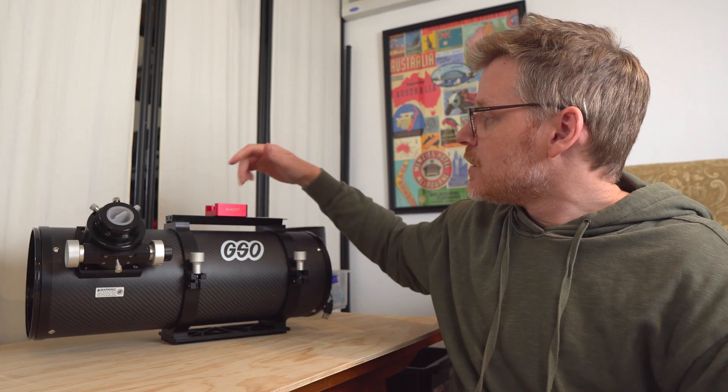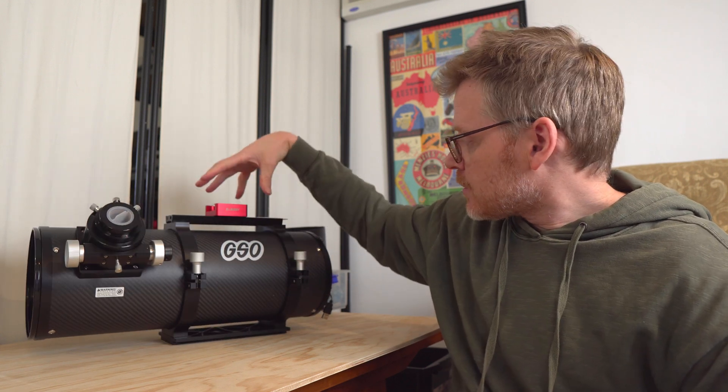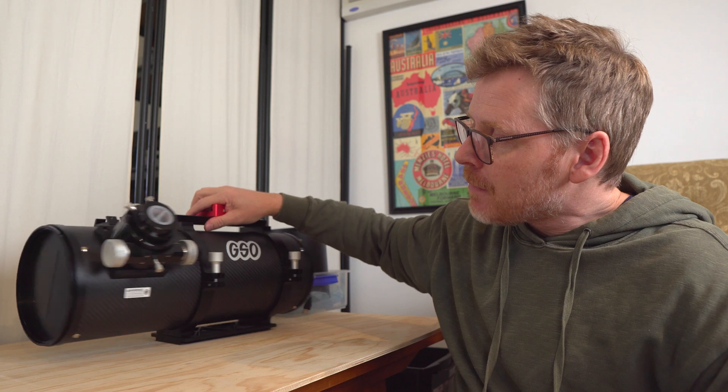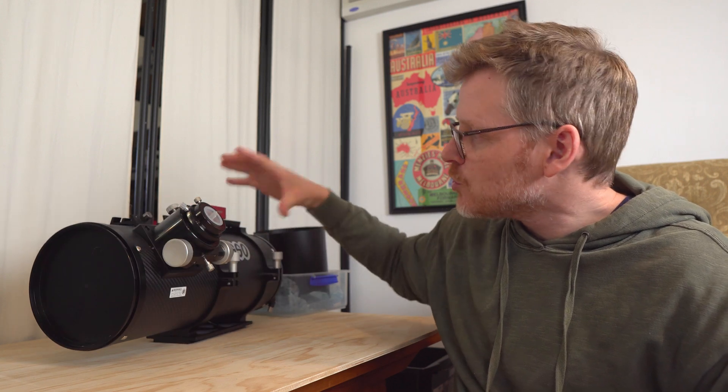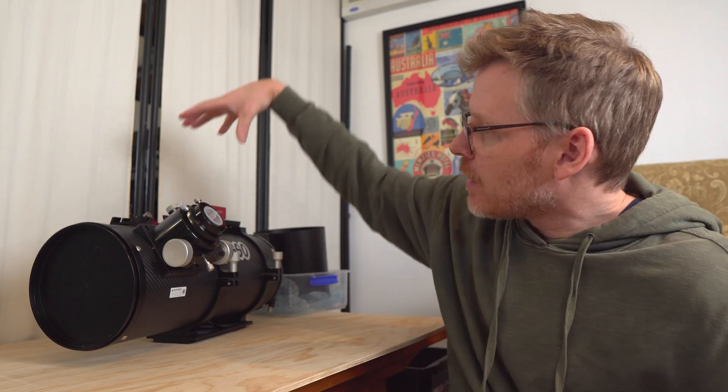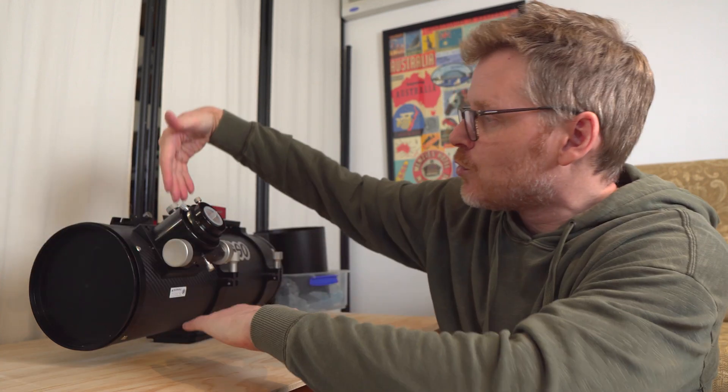And yeah, all I'm going to need to do for now is I'll probably just mount my guide scope up here. Eventually I might put an off-axis guider just because I don't have so much weight sort of floating off of the top. But what I'll probably do is have my guide scope here and then have this oriented down with the camera, so it sort of evens the weight out.